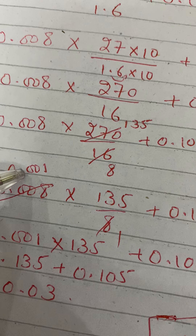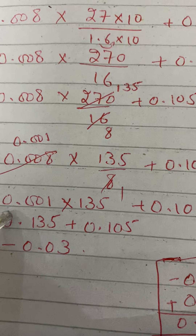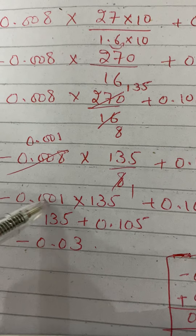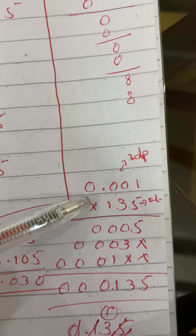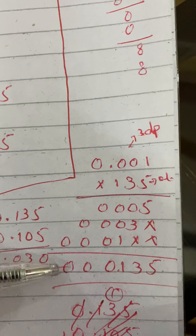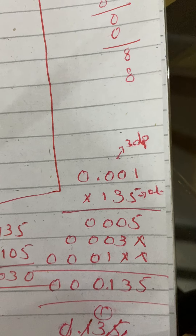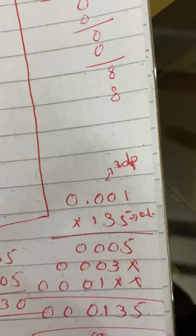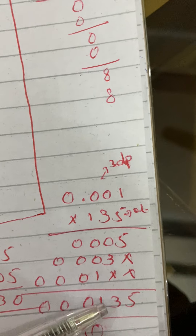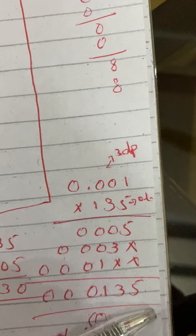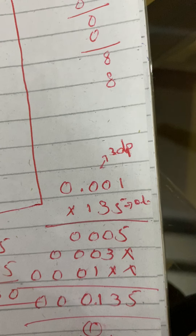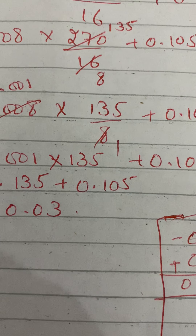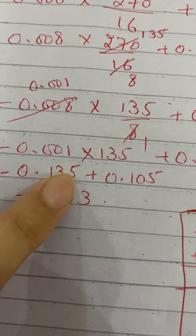So we are left with minus 0.001 multiplied by 135, plus 0.105. Multiplying 0.001 by 135 and counting the decimal places, the answer is 0.135. We only need one leading zero, so we write it as 0.135.